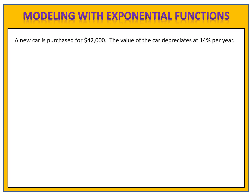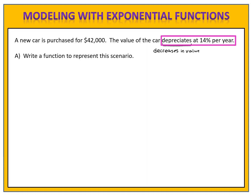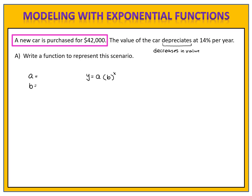Now let's look at a scenario involving a decrease. A new car is purchased for $42,000. The value of the car depreciates at 14% per year — depreciates simply means decreases in value. When we decrease by a percentage per period of time, in this case per year, we have an exponential function: y equals a times b to the x. A is always what you start with. The car was purchased for $42,000, so a equals $42,000.